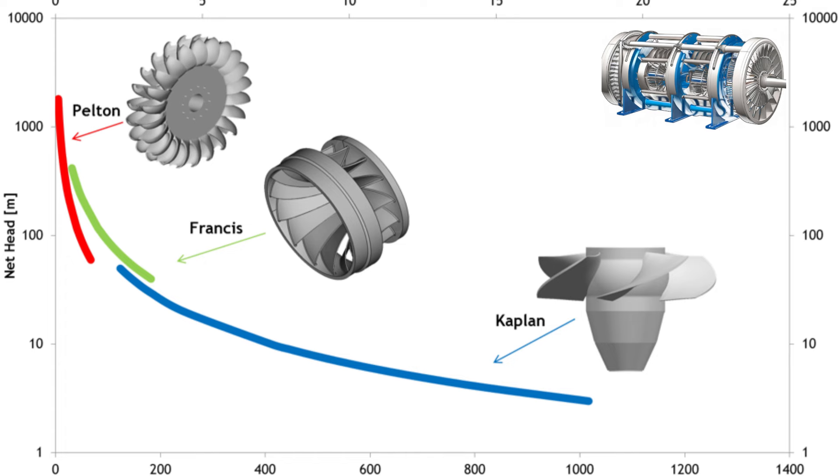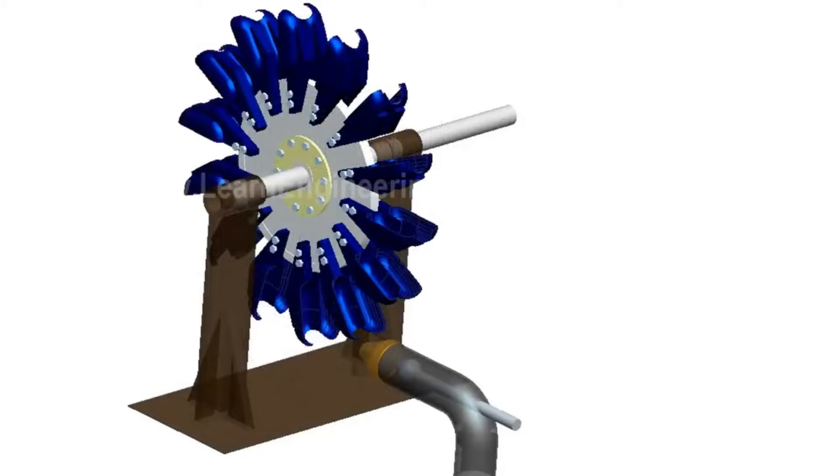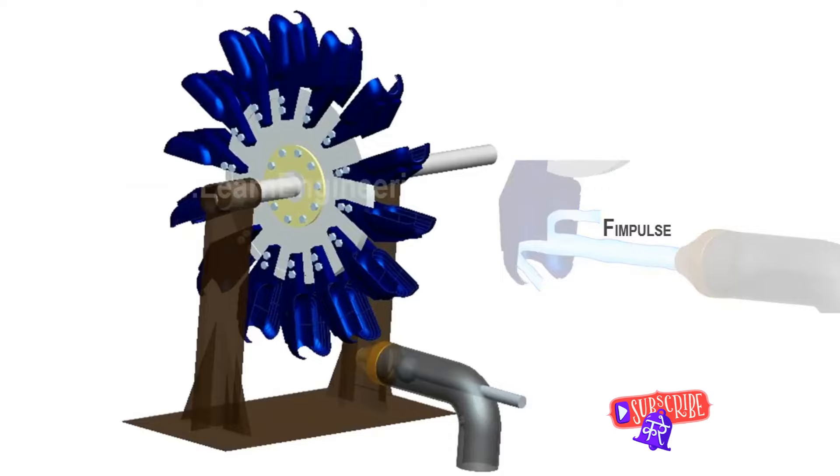Let's start with the Pelton turbine. Named after its inventor Lester Allen Pelton, it's a type of impulse turbine. It operates by converting potential energy into kinetic energy. Water rushes in at high pressure hitting the turbine's spoon-shaped buckets which then rotate the wheel. The water's kinetic energy transfers to the wheel, generating power.